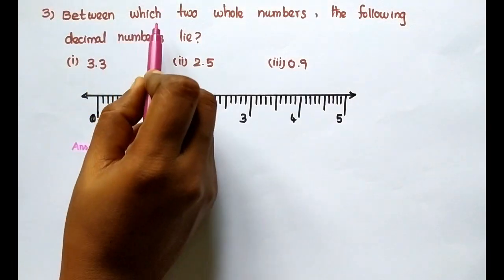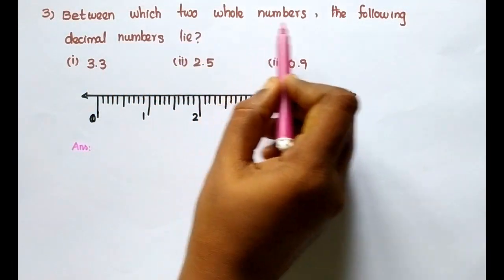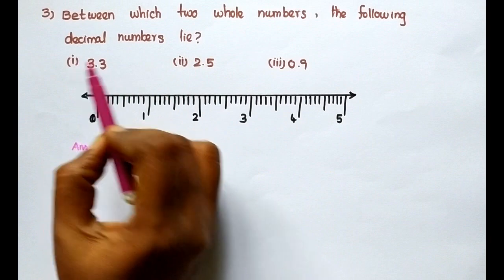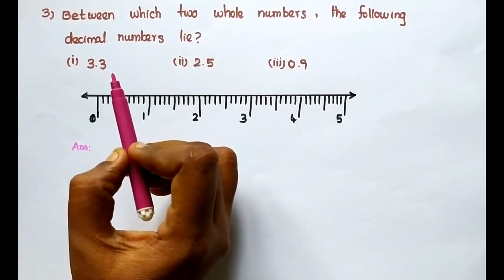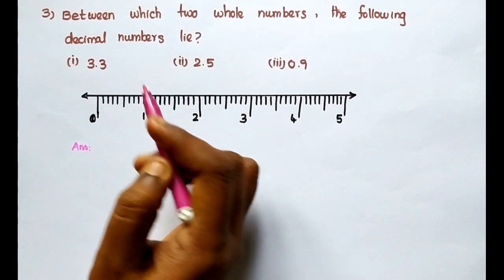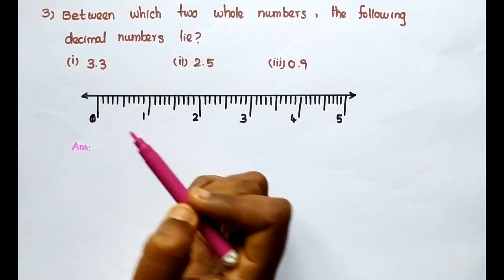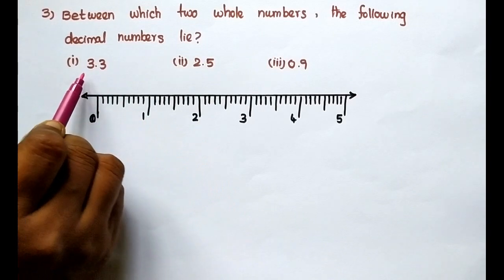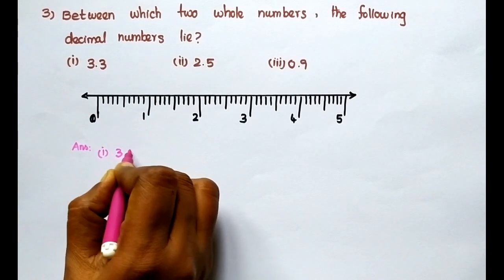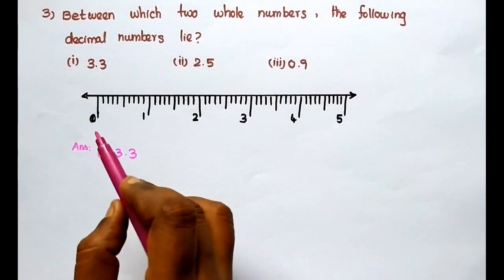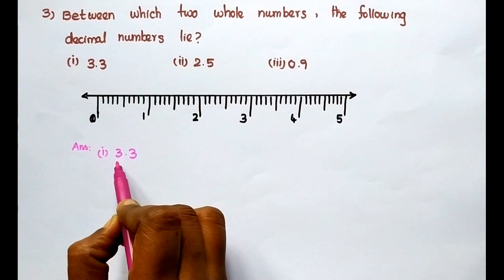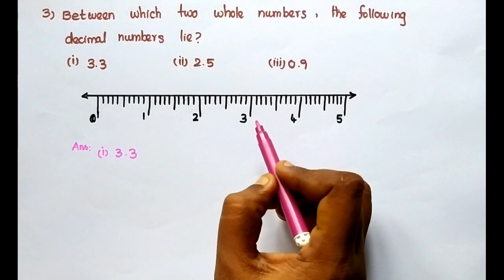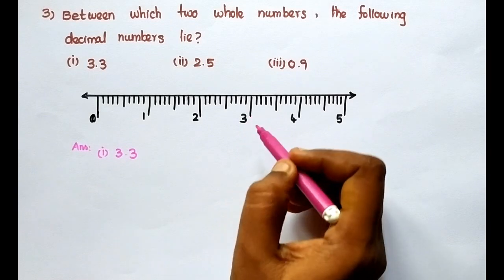Third sum: Between which two whole numbers do the following decimal numbers lie? They give the decimal numbers and we have to find the two whole numbers between which each lies on the number line. First: 3.3. The first whole number is 3, the next whole number is 4. In between, 3.3 lies on the number line.